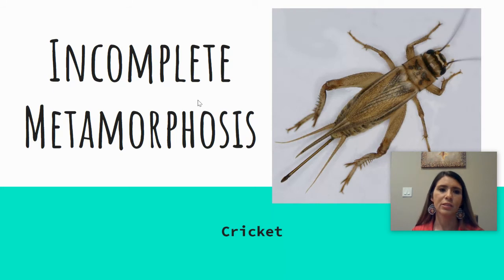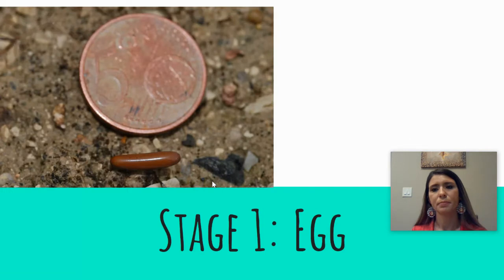Next, for incomplete metamorphosis, we'll be looking at the cricket. Stage one is the egg. As you can tell, the egg is pretty small in comparison to the penny.